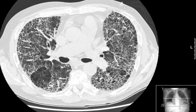Centrilobular nodularity deposits at the center of the secondary lobule but spares pleural surfaces. The differential includes endobronchial tuberculosis, bronchopneumonia, endobronchial spread of tumor, and silicosis or coal-workers pneumoconiosis. For randomly distributed nodules, the differential includes miliary tuberculosis, fungal pneumonia, hematogenous metastasis, and diffuse sarcoidosis.